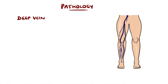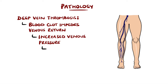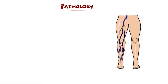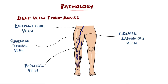In a deep vein thrombosis, a blood clot will form that impedes the return of the venous flow. This causes increased pressure within the veins, leading to the clinical picture. This happens most commonly in the veins of the leg, specifically the popliteal and femoral veins, but it can happen in the upper limbs as well.